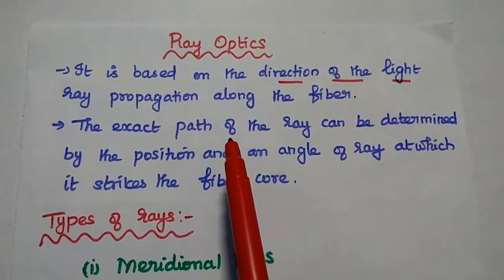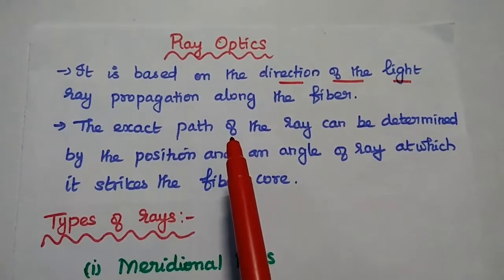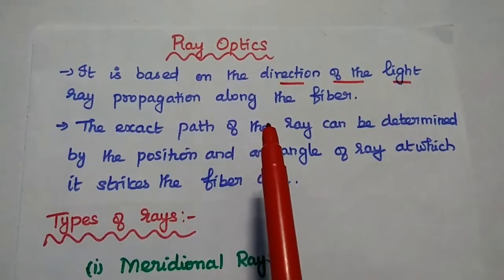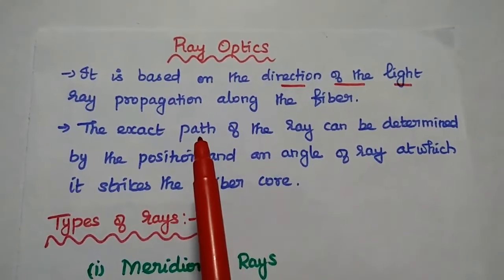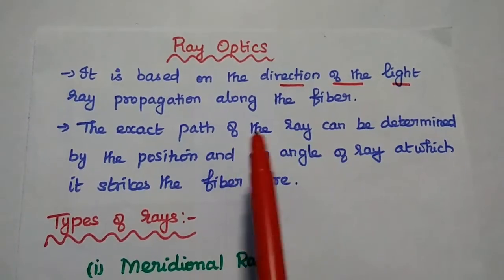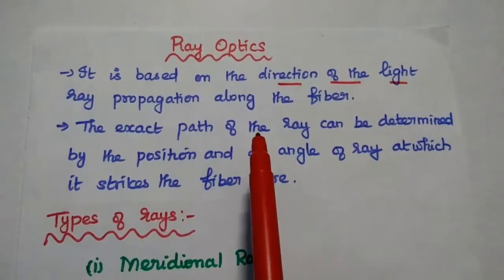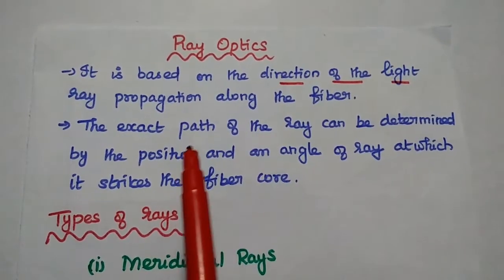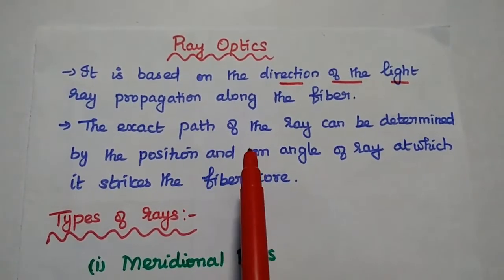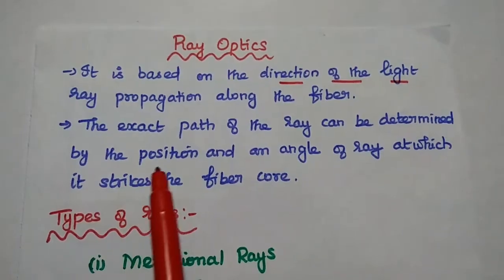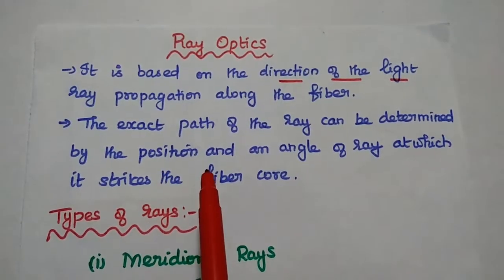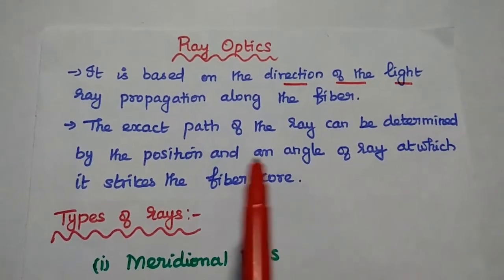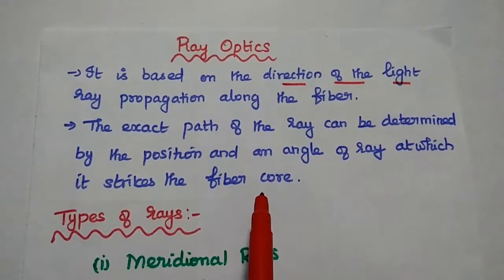Dear students, now we are going to discuss ray optics and types of rays in detail. Ray optics is based on the direction of light propagation along the fiber. Here the exact path of the ray can be determined by using the position and the angle of the ray at which it strikes on the fiber core.